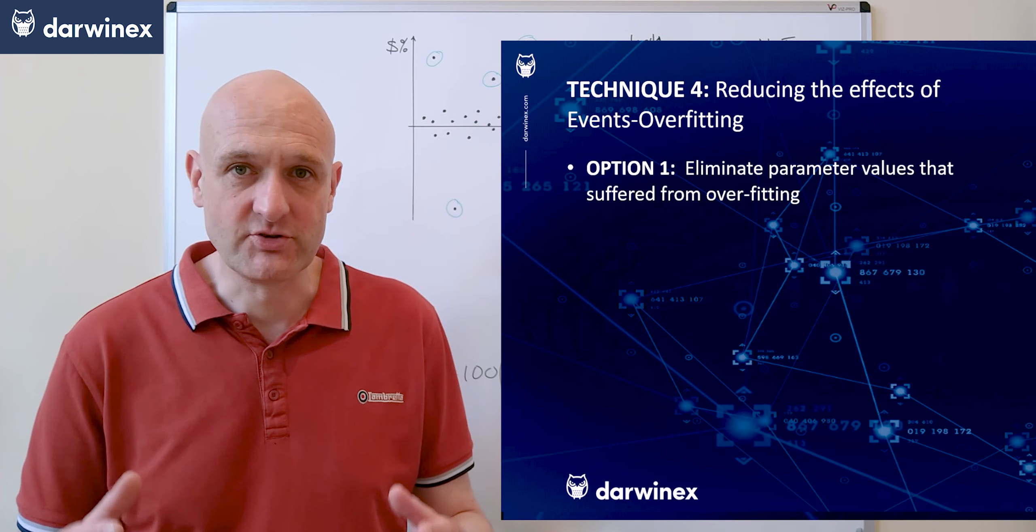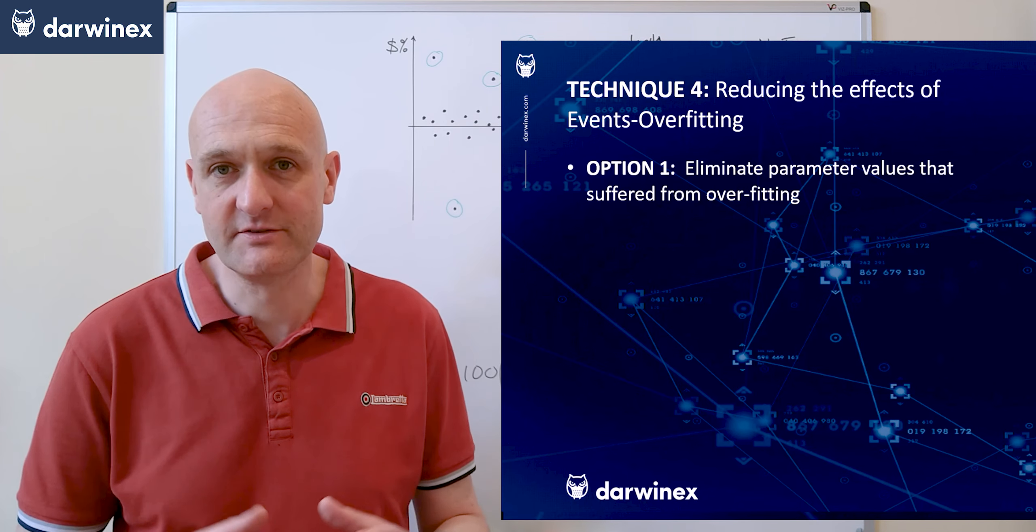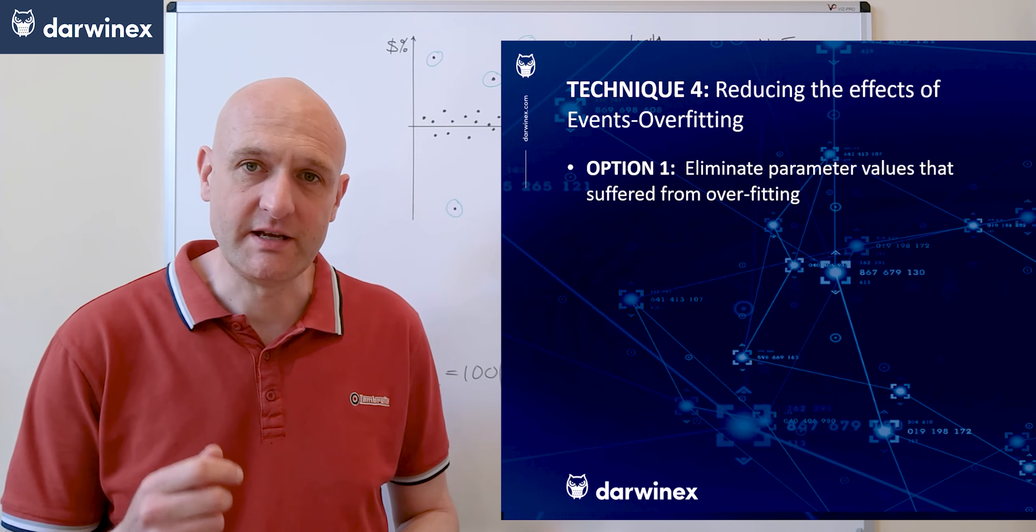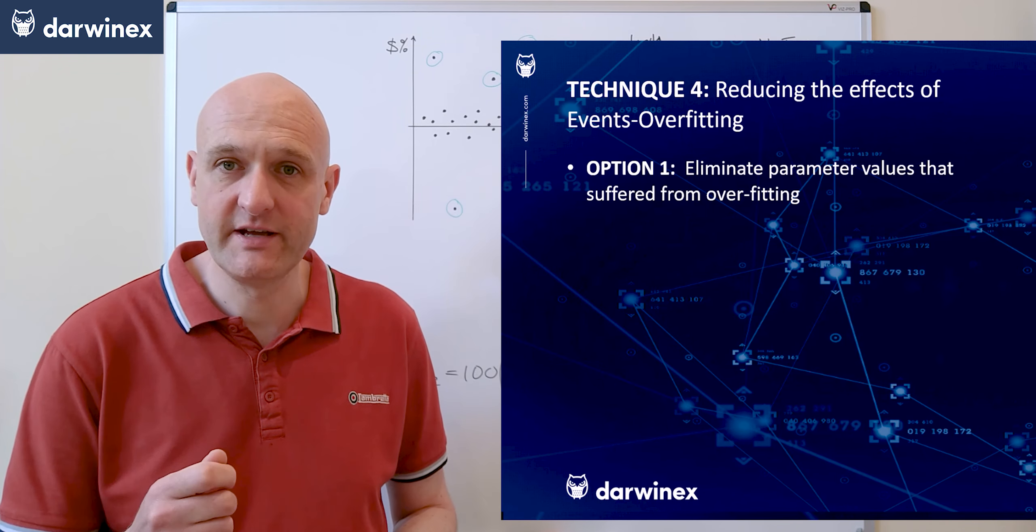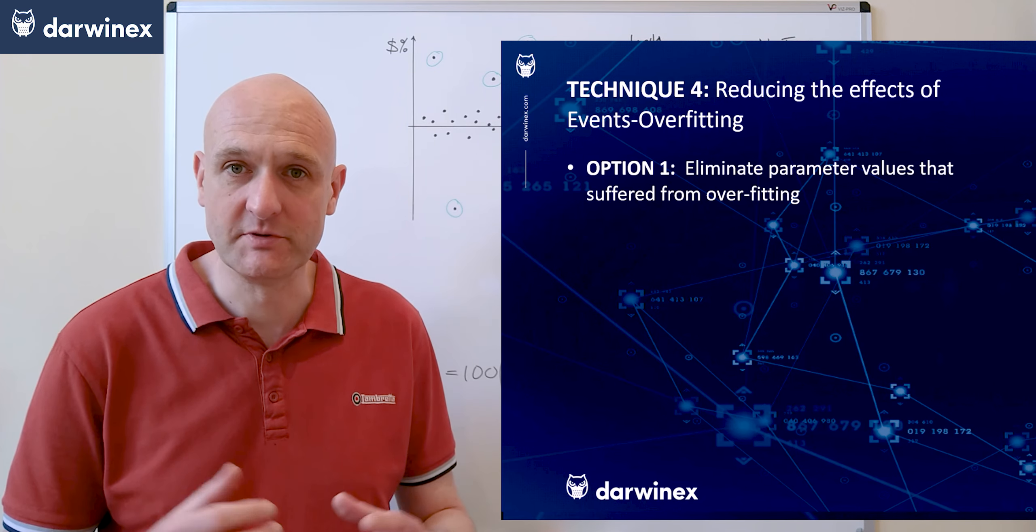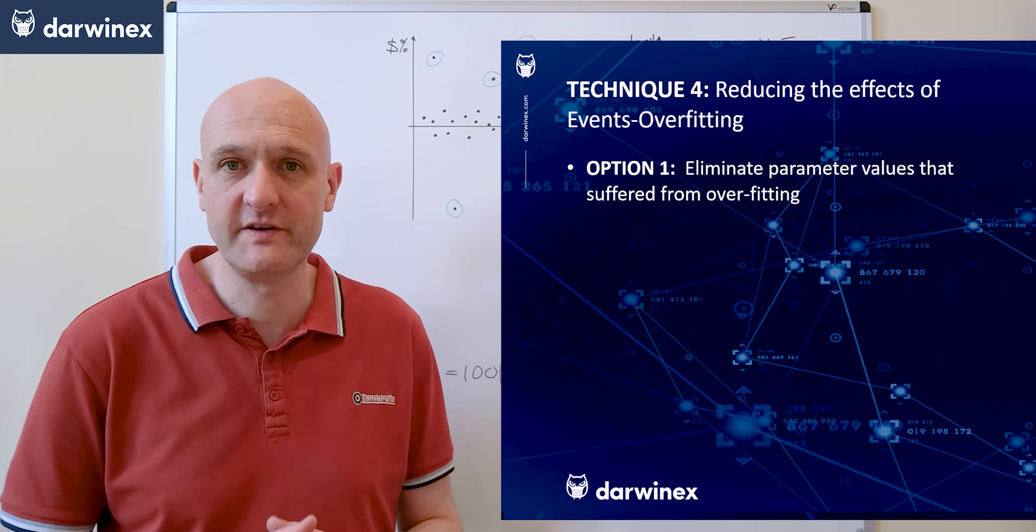So in MetaTrader you'd place the code in the onTester function of your EA. In this function you'd have a routine that iterated through each trade that was executed and performed the same analysis that I illustrated in Excel a moment ago to calculate the overfitting score.